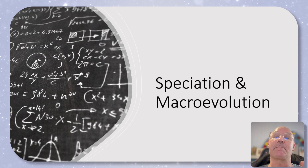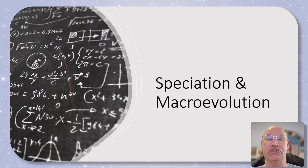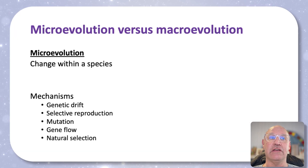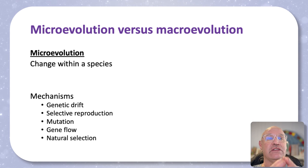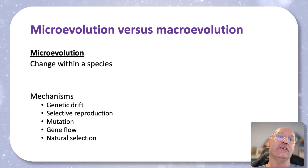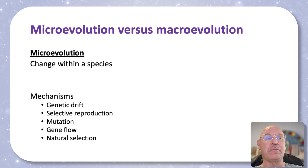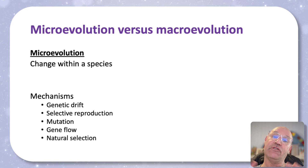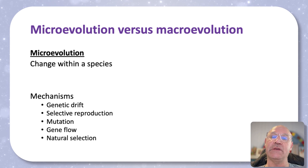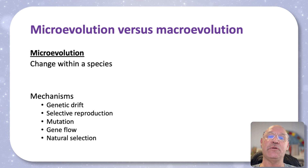Let's talk about macroevolution and speciation. We've talked about microevolution before, which is change within a species, and the mechanisms being genetic drift, selective reproduction, mutations, gene flow, and natural selection. Through those processes we get a change in allele frequency, so there are changes within a species.